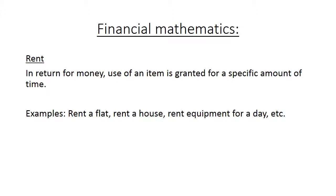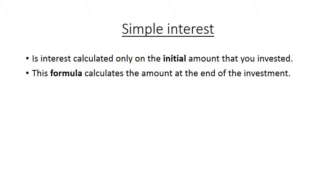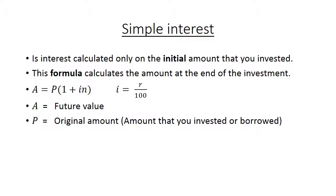Simple interest. Simple interest is calculated only on the initial amount that you invested. The formula calculates the amount at the end of the investment. A equals P in brackets 1 plus i times n. The i stands for interest, and the R is the rate divided by 100. A is my future value. P is the original amount that you invest or that you borrow. i is the interest rate per annum, it means per year. And the n is the times in years.